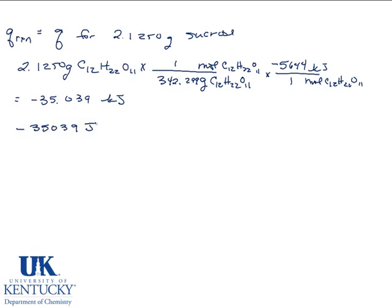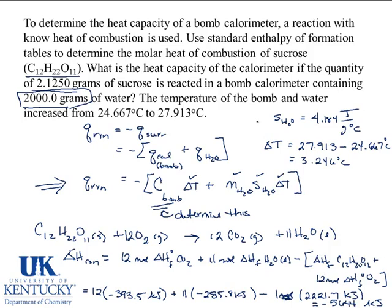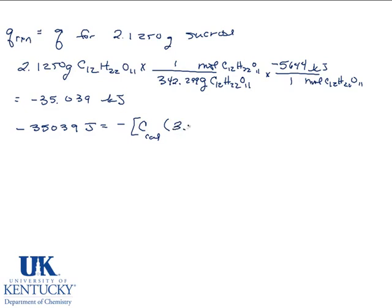Negative 35,039 joules is equal to negative, well, the heat of the calorimeter that I don't know. The delta T, we determined that to be 3.246 degrees Celsius. The mass of the water, that was 2000. 4.184 joules per gram degrees Celsius. And again, the same delta T, 3.246 degrees Celsius.